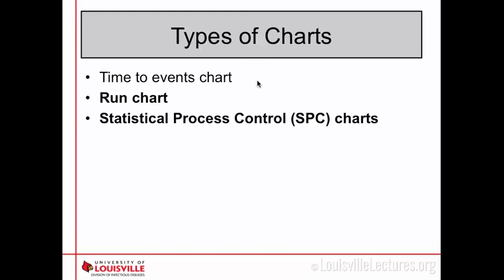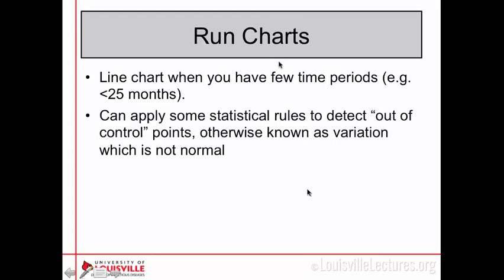We're just going to look at run charts and statistical process control charts today — there is a lot of literature on those other chart types if you're interested. Run charts and process control charts are what we're looking at, and in those you would use your monthly infection rates. When you first start out with your project, you might not have a lot of data points — if you started collecting five months ago, you have potentially five months' worth of data.